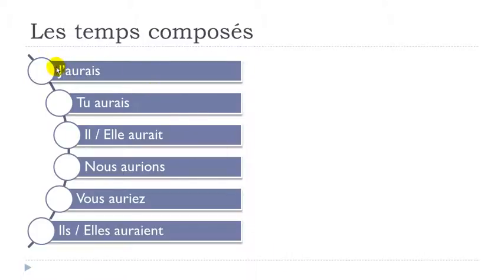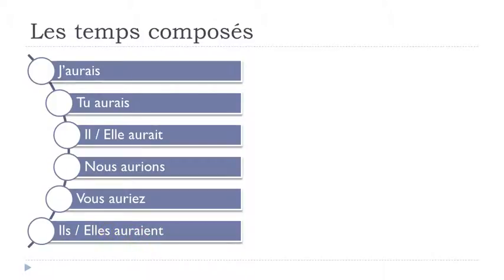Pronunciation for avoir at conditionnel présent: j'aurais — final S not pronounced, tu aurais — same, il aurait and elle aurait — final T not pronounced, phonetically the same form; nous aurions — final S not pronounced with liaison; vous auriez — EZ at the end; ils auraient and elles auraient — ENT not pronounced.